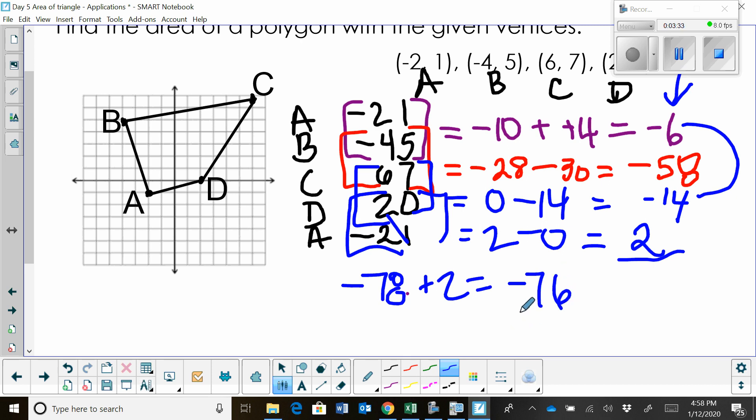Now, what do I do with that? The formula says I take the absolute value of that. So I'm going to take a positive 76 and I'm going to divide that by two. So what's that going to give me? 38.